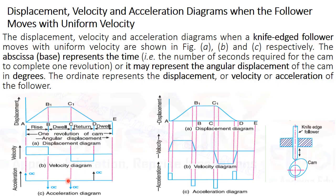When velocity suddenly increases in the negative direction at t equals zero, the acceleration again tends to infinity. From this point onward, velocity is constant but negative, so acceleration is zero. Again, when velocity suddenly increases at t equals zero, acceleration tends to infinity. That is the ideal diagram drawn for the knife-edge follower.